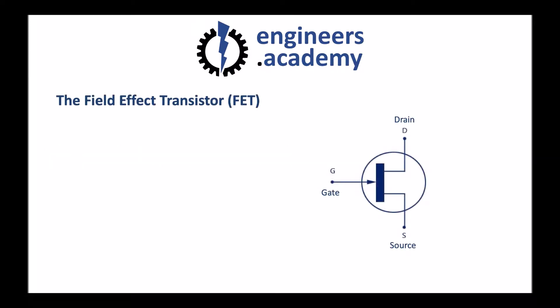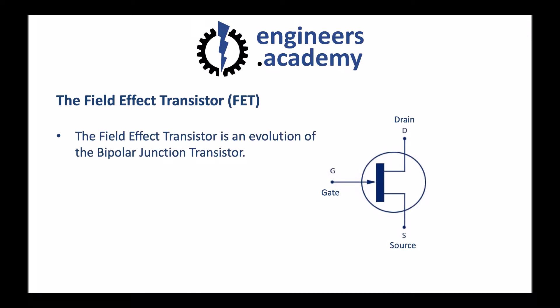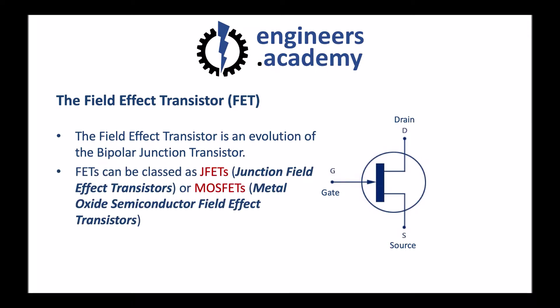The field effect transistor differs from the bipolar junction transistor, which we covered in our previous video, in a few key ways, which we'll outline in this video. It's an evolution of the bipolar junction transistor and functions slightly differently. FETs are usually classed as J-FETs, or junction field effect transistors, or MOSFETs, which stands for metal oxide semiconductor field effect transistors. In this particular video we're going to focus on J-FETs.